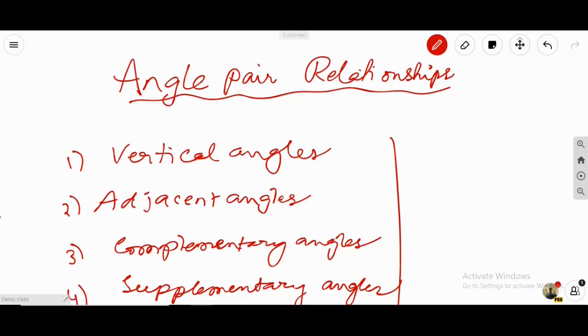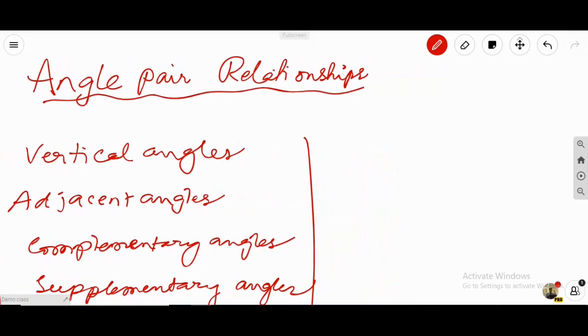Hi everyone. Let's talk about angle pair relationships today. And the first one I'm going to talk about is the vertical angles. When two lines intersect, they form four angles.